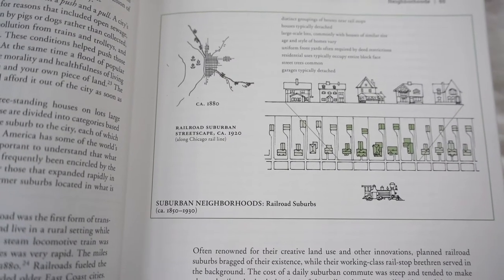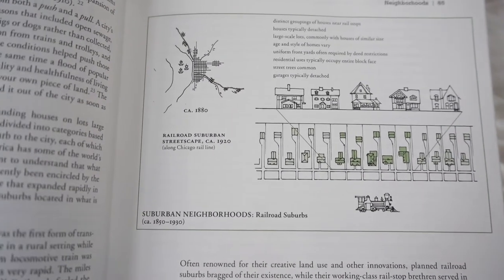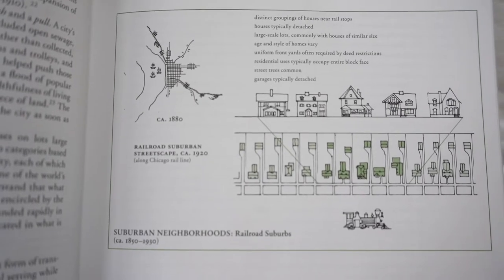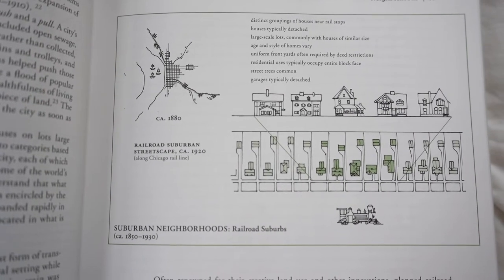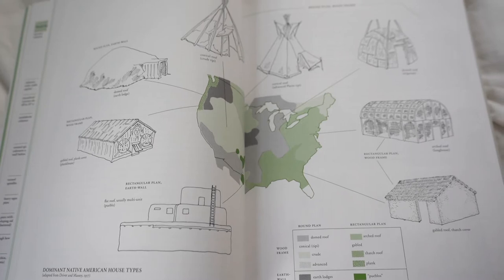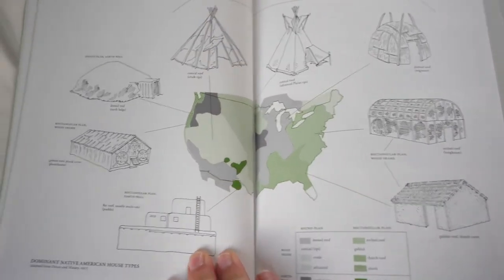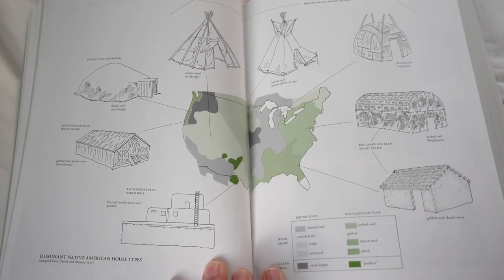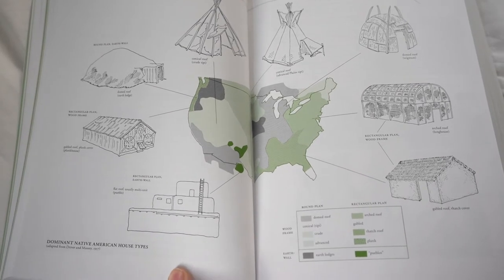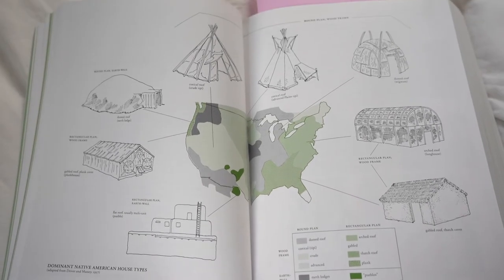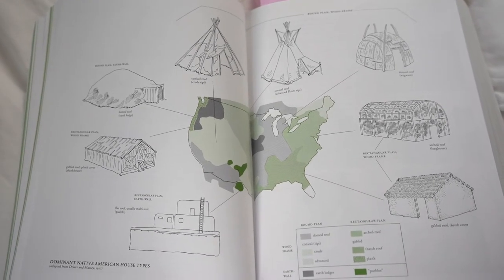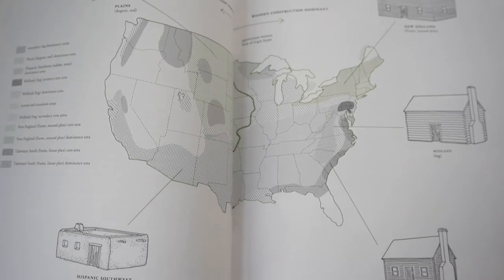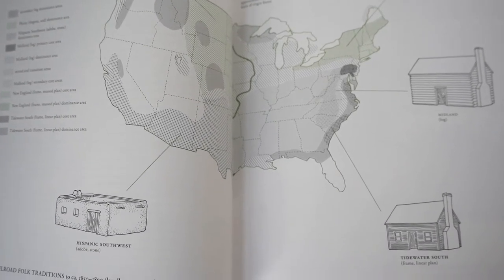And then there's a section on neighborhoods. It's really interesting to see how urban planning developed with the different types of transportation. And then moving into the next chapter is about folk houses. There is information about Native American folk houses and you can see the variety regionally, and the same thing for the pre-railroad folk houses.